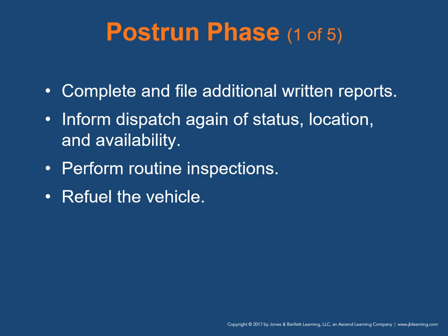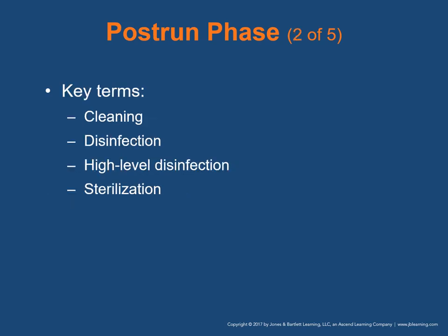In the post-run phase, complete and file any additional reports, inform dispatch of your status, location, and availability, perform routine ambulance inspections, and refuel your vehicle. Key terms: cleaning is the process of removing dirt, dust, blood, or other visible contaminants from a surface or equipment. Disinfection is the killing of pathogenic agents by directly applying a chemical to a surface or equipment. High-level disinfection is the killing of pathogenic agents by potent means of disinfection. Sterilization is a process — such as use of heat or an autoclave — that removes all microbial contamination.